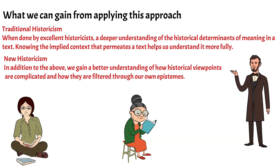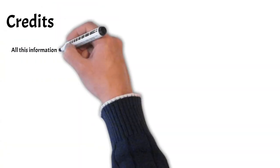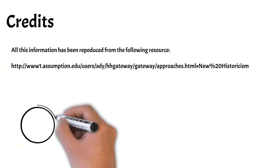New historicism, in addition to what historicists do, gives us a better understanding of how historical viewpoints are complicated and how they are filtered through our own epistemes. What enters the historical scholarship in new historicism is a genealogy of our own positioning — our subjectivity — and knowing that we are discursively produced is important.